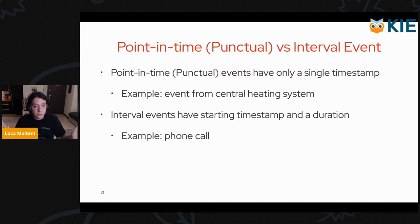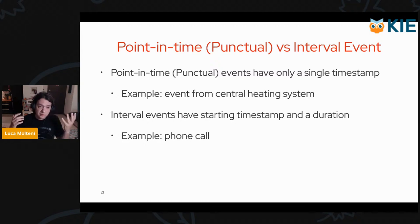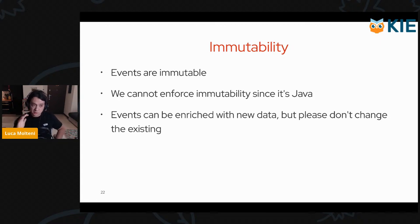An important difference to understand is between point-in-time events (also called punctual) versus interval events. A point-in-time or punctual event has only a single timestamp — imagine an IoT event such as the heating being turned on. Interval events have a starting timestamp and a duration — for example, a phone call will have a timestamp of when it started and a duration of how long it lasted. This is important because temporal operators act differently depending on whether you're using point-in-time or interval events.